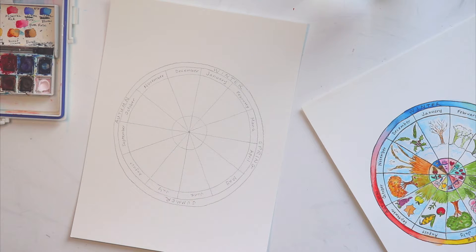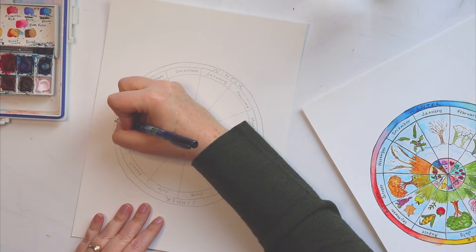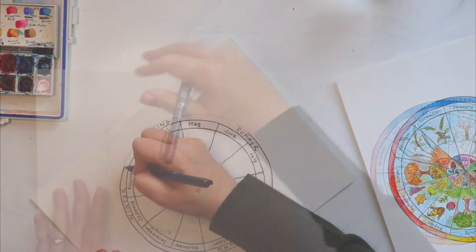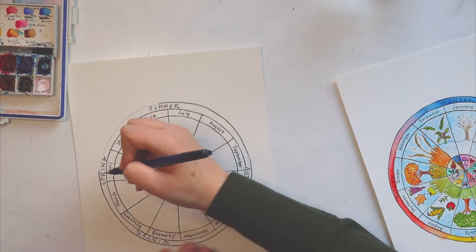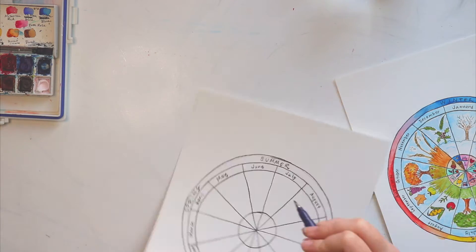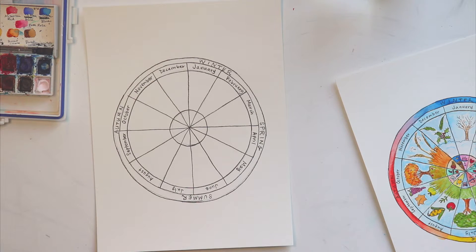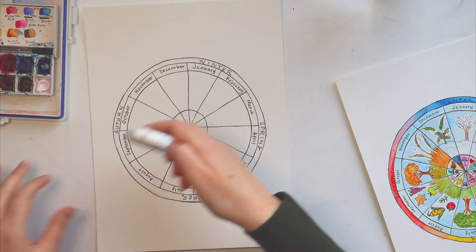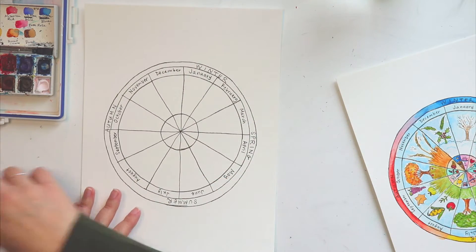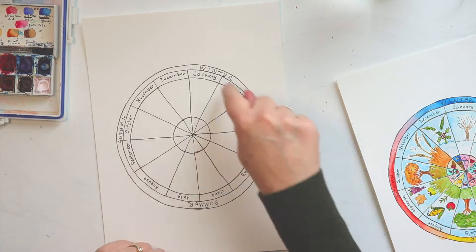All right. Now I'm just going to outline everything with my black pen. You can choose to do that or just leave it in pencil. And once you have all of that in, you can just erase your pencil lines. So I've got everything written in there, all of my months and then my seasons.